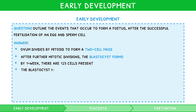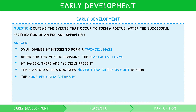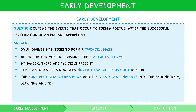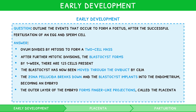The blastocyst has now been moved through the oviduct by cilia. In the uterus, the zona pellicida breaks down, and the blastocyst implants into the endometrium, becoming an embryo. The outer layer of the embryo forms finger-like projections called the placenta. And by 8–9 weeks, bone is formed and the mass of cells is considered a fetus.